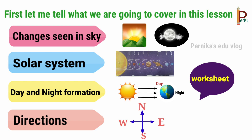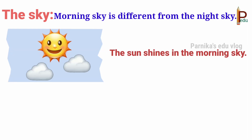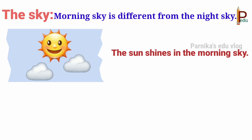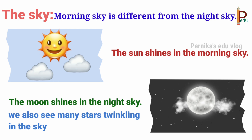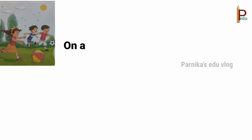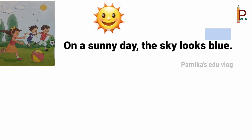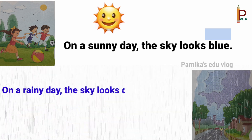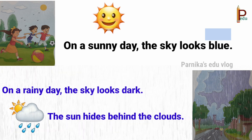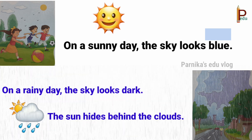Let's start. The sky — morning sky is different from the night sky. The sun shines in the morning sky. The moon shines in the night sky, and we also see many stars twinkling in the sky. On a sunny day the sky looks blue. On a rainy day the sky looks dark and the sun hides behind the clouds.